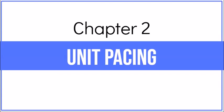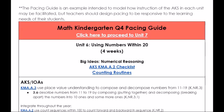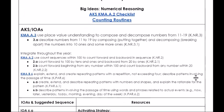Chapter 2: Unit Pacing. The pacing guide is an example intended to model how instruction of the AKS and IOAs may be facilitated, but teachers should design pacing to be responsive to the learning needs of their students. For Unit 6, Using Numbers Within 20, we suggest about 4 weeks. The big idea is numerical reasoning. The AKS and IOAs have been strategically clustered together, and the left column provides the learning progression — including the concrete-representational-abstract progression, specific learning targets, and suggested manipulatives. The right column provides suggested resources to guide instruction.